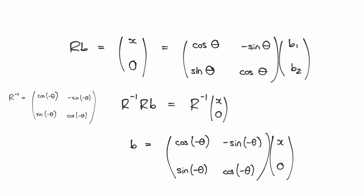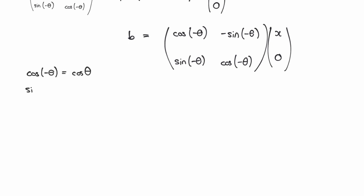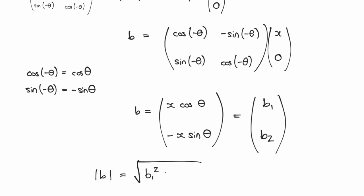The point of all this is that now, when we do the matrix multiplication, the 0 in the right-hand vector makes the calculation much easier. So we're just left with this equation. And then, equating the components, we have B1 equals x cos theta and B2 equals minus x sin theta. To find what x is, we use a bit of trigonometry. By squaring B1 and B2 and adding them together, and then taking the square root, we can see that this is equal to x, so x equals the length of the vector B.